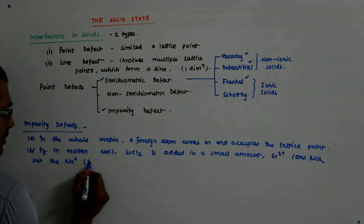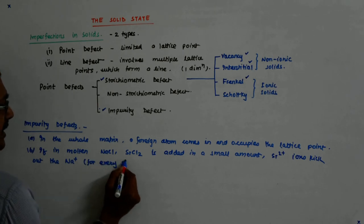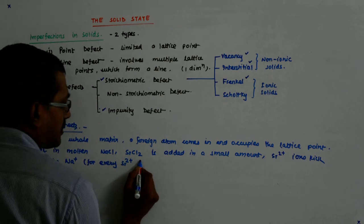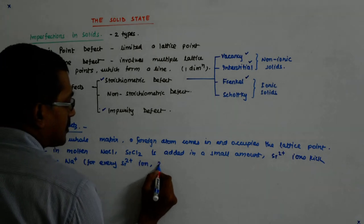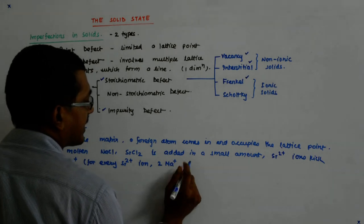And to maintain the electrical neutrality, for every Sr2+ ion, two Na+ ions get kicked out.